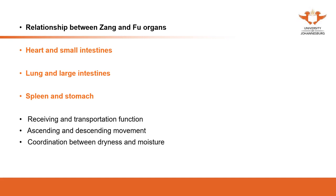The dysfunction or impairment of fu organs produces many symptoms of storing, which they should not do. Treatment towards fu organs focuses on recovering the transporting and discharging function. We do not want fu organs to store food inside, so we try to recover their receive-and-discharge function. We will also focus on the coupled organs: heart and small intestine, and lung and large intestine.